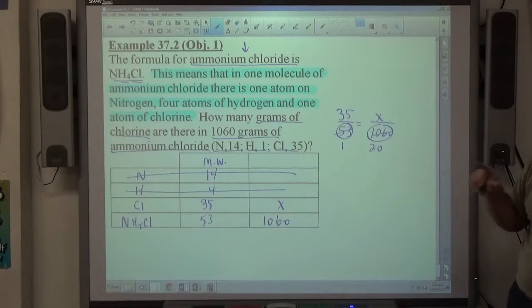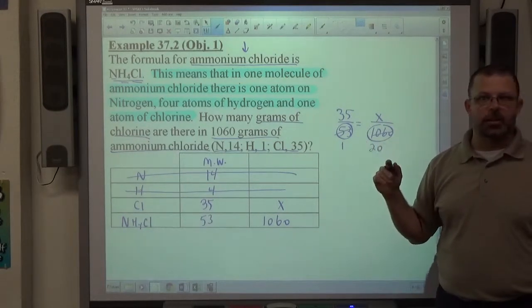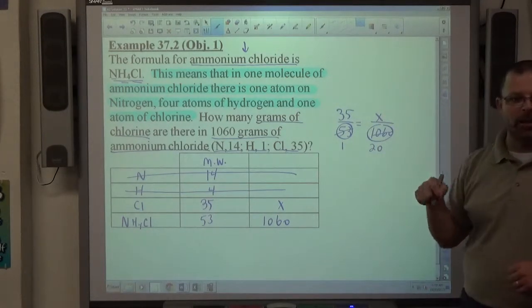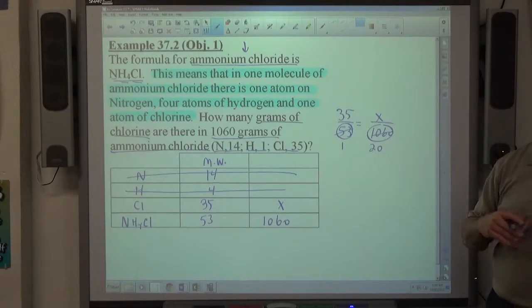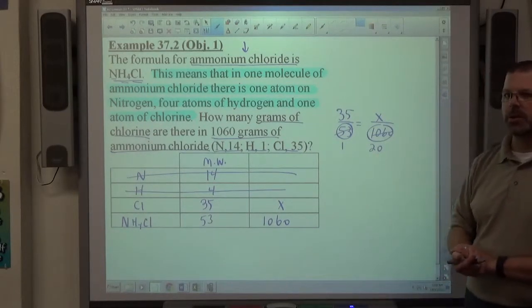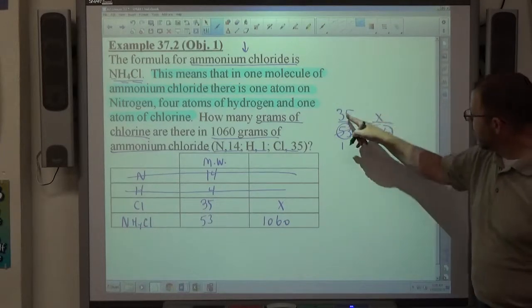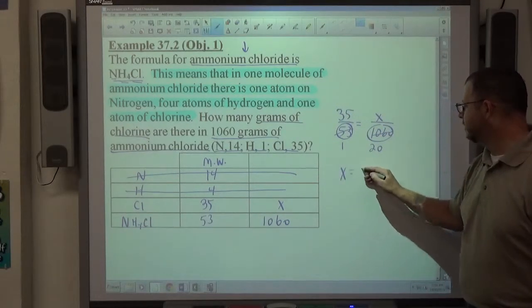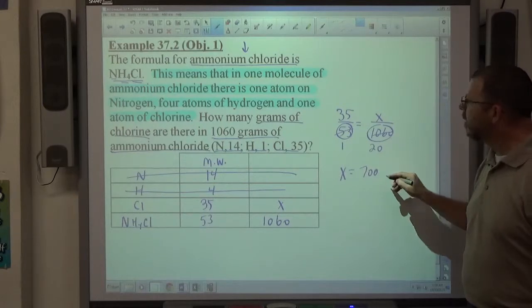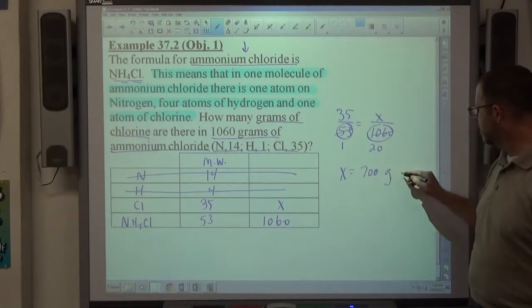But decimal answers are fine on these. It can happen. But I think right now you should expect whole numbers more often than not. So if you're getting a lot of decimals, check your work. If you get an occasional decimal, it's probably not a big deal. 35 times 20 is 700. 700 grams of chlorine.